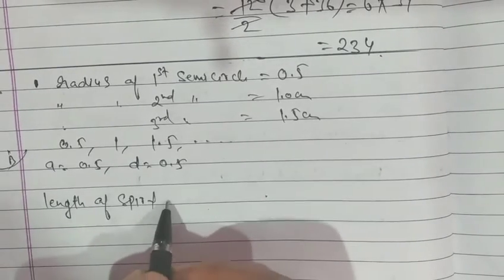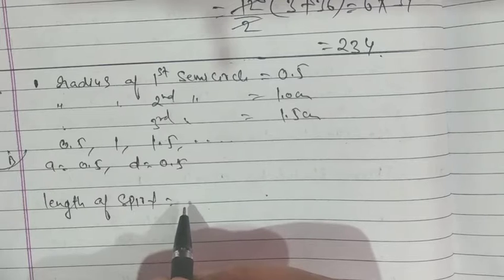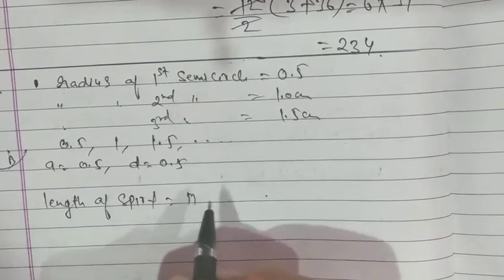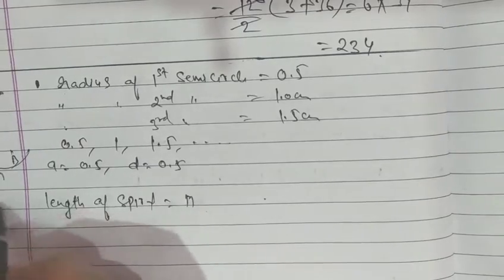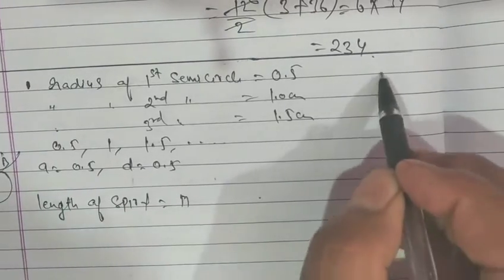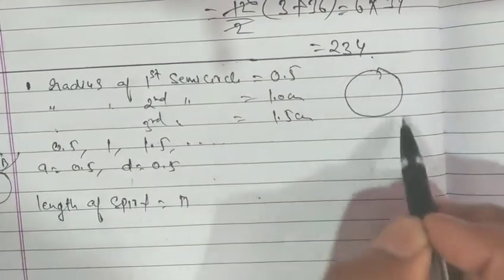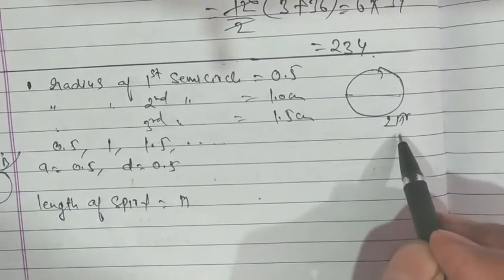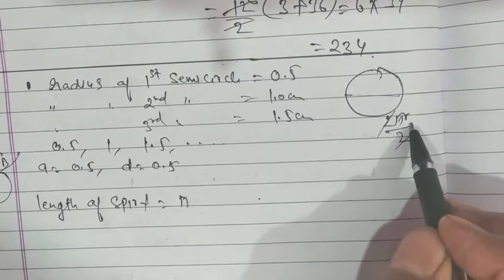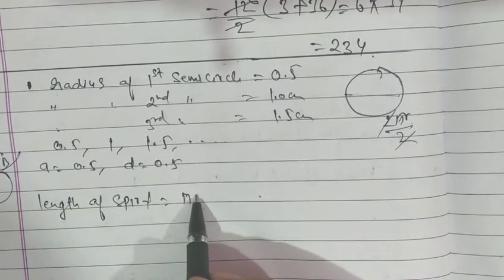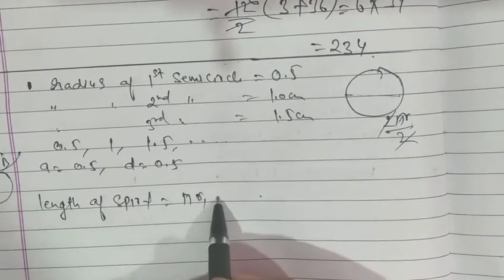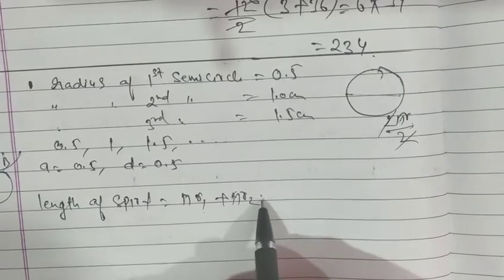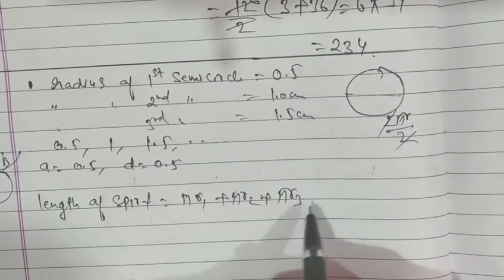Length of spiral means 13 consecutive semicircles plus, which is πr. The full circle, if it's a full circle, its circumference is 2πr. It's given as half, so 2πr upon 2, 2 cancels, πr remains. So first one is πr1, second is πr2, third is πr3, plus so on, so on, up to πr13.